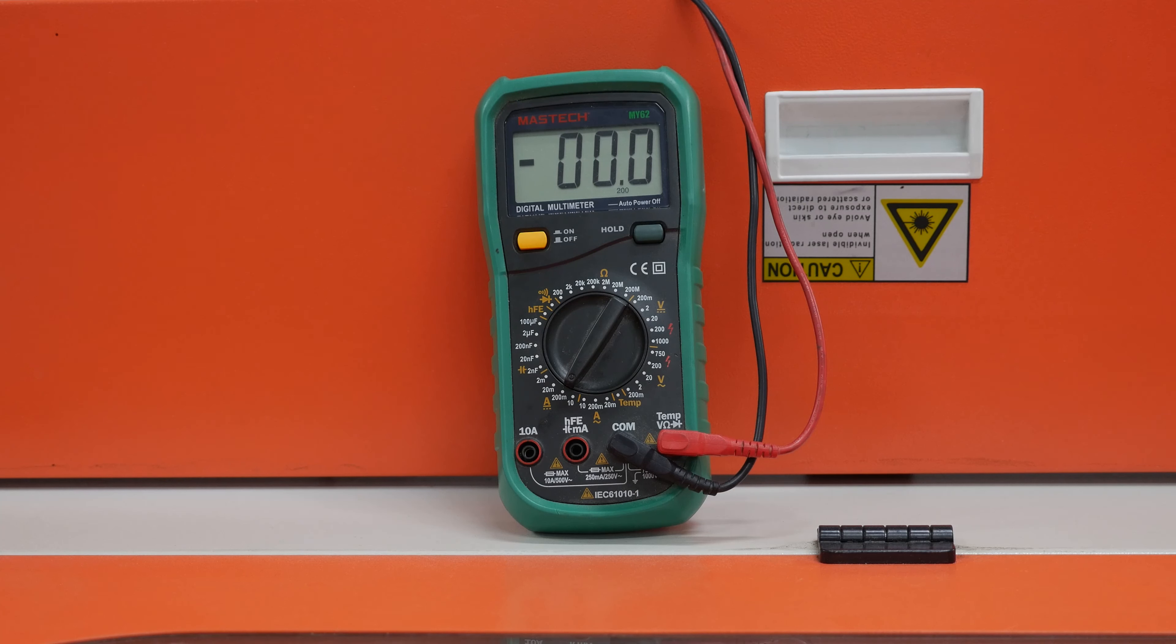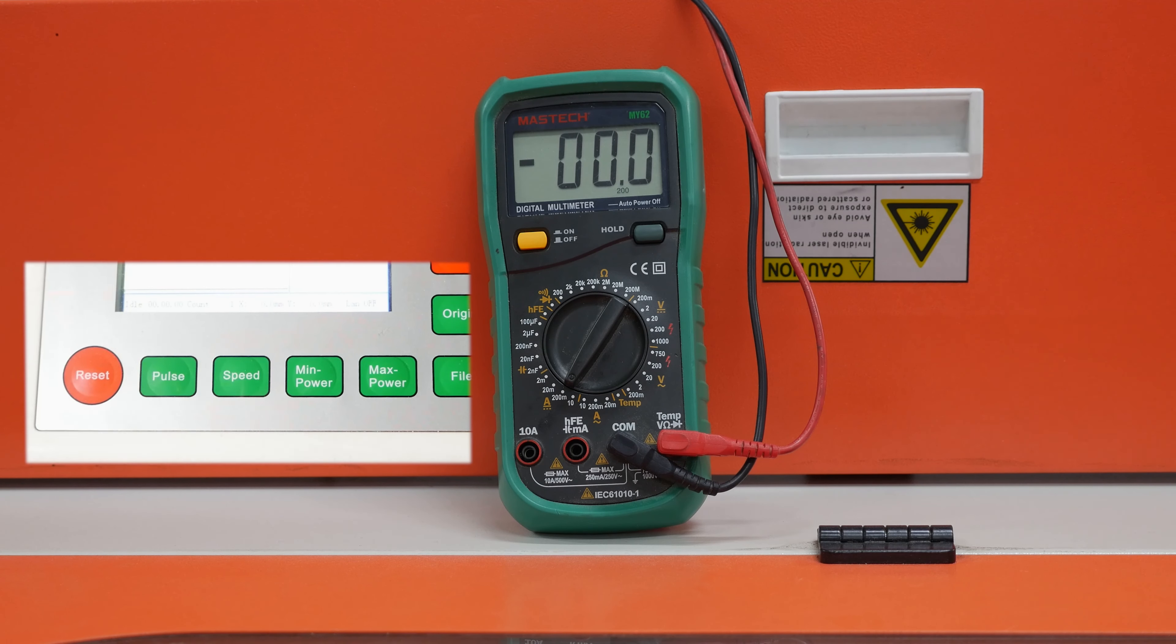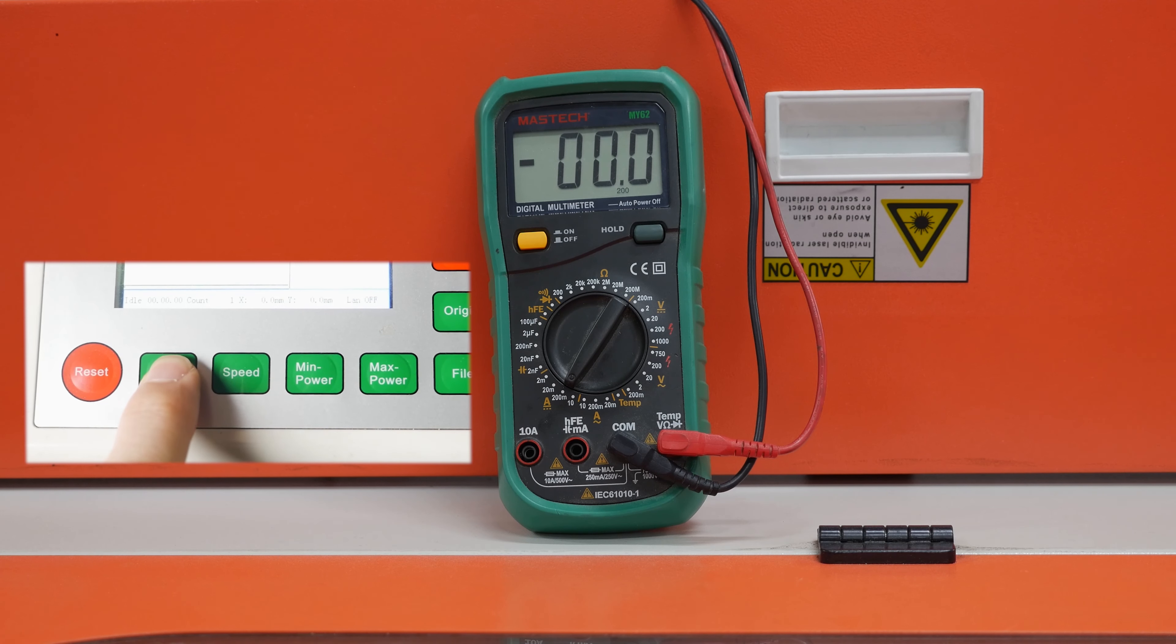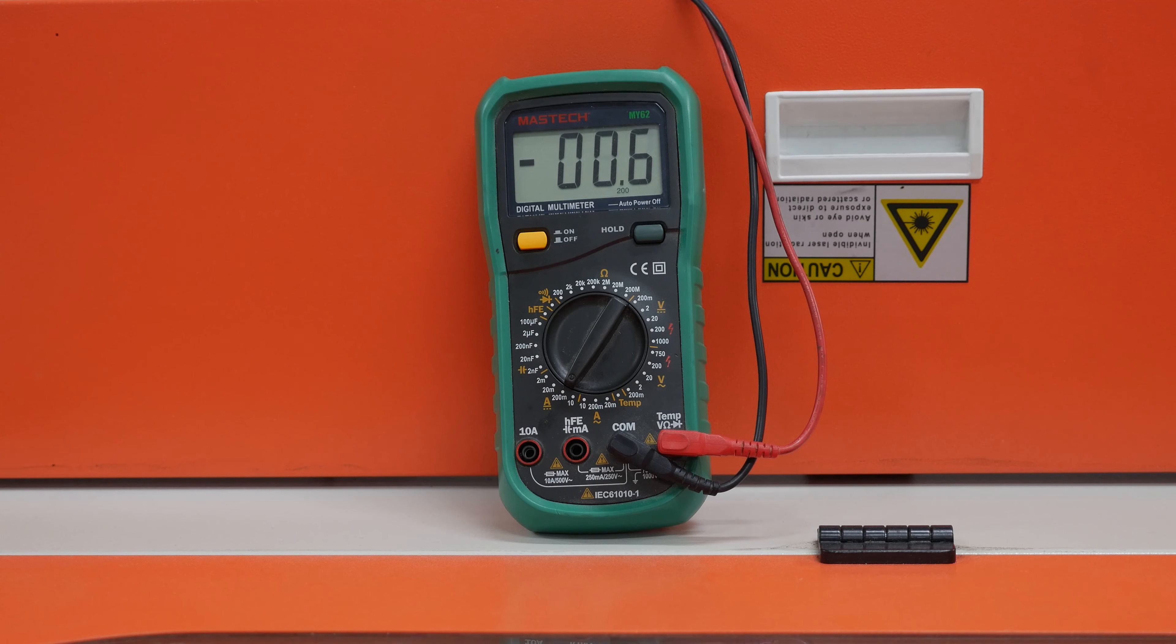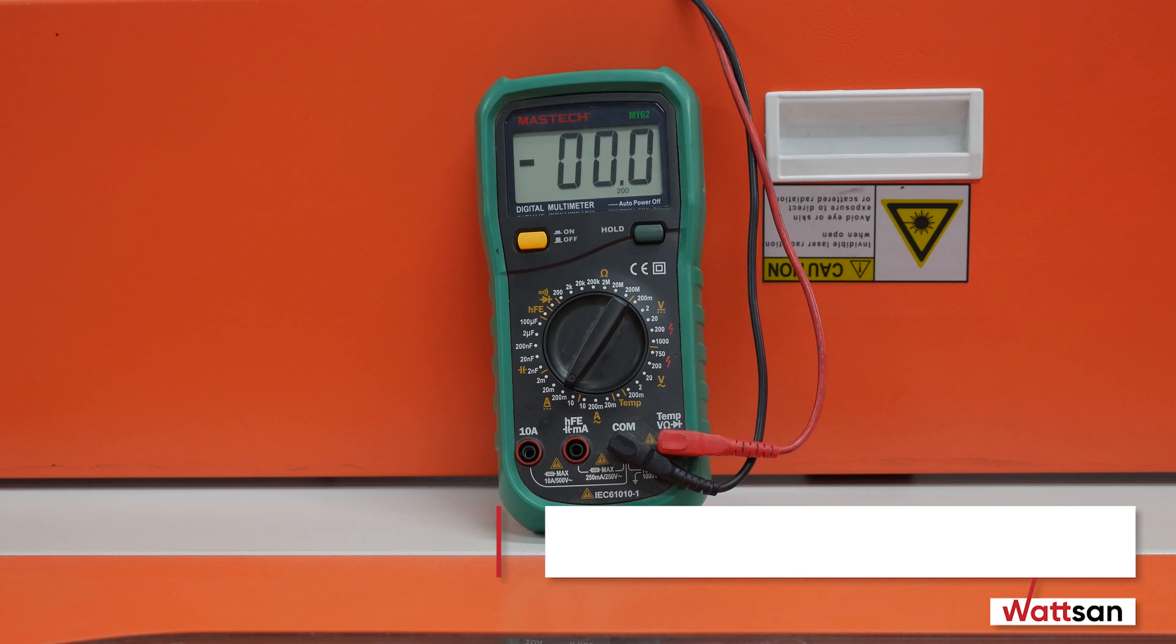When adjusting, you should observe the multimeter readings. Press Pulse on the display. Watch the multimeter and twist the potentiometer in the direction you need, in the direction of reducing the current or increasing the current. For this case, we have set the maximum current strength to 28 milliamps.